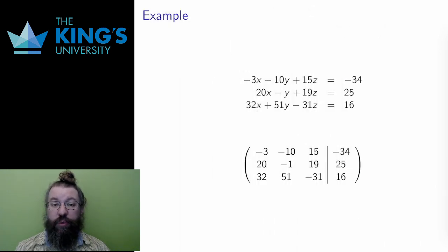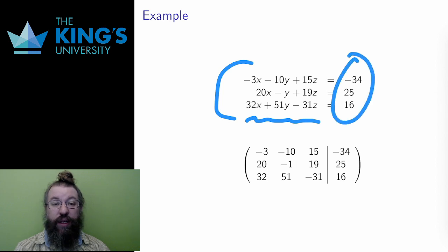Here is another example. Again, three equations and three variables. And again, I write the equations in the correct setup. Variables on the left and the other constants on the right. Then, row by row, I transfer the coefficients into the matrix.